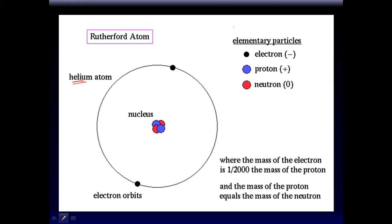It is the electromagnetic force that allows a proton to attract an electron — kind of like the Force in Star Wars that attracts things. You can't see this force, just like you can't see a magnetic-type force.